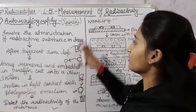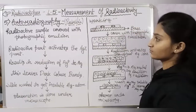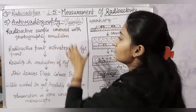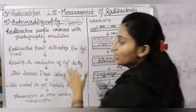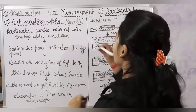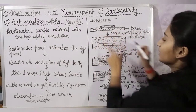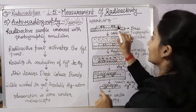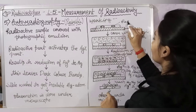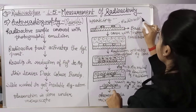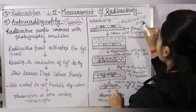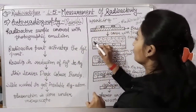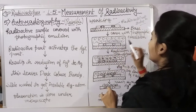The principle is that first we take a radioactive sample and cover it with a photographic emulsion. When we cover the sample in the photographic emulsion, this is the sample and this is the base. We covered it with the radioactive substance, and then we covered it with photographic emulsion.